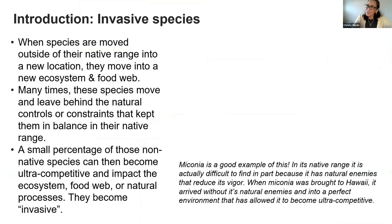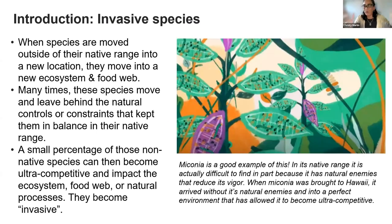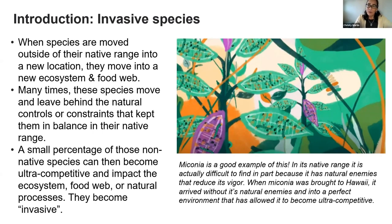First, I want to talk a little bit about invasive species. I used to be a school teacher and the lesson I learned from teaching is to never assume your audience is on the same page with definitions. When species are moved outside of their native range — where they evolved for perhaps millions of years — into a new location, they insert themselves into that new ecosystem and food web. They can be benign or problematic. Many times species move without their natural enemies, those control organisms like parasites and insects that exert enough control to keep them in balance in their native range.